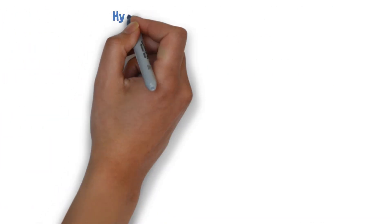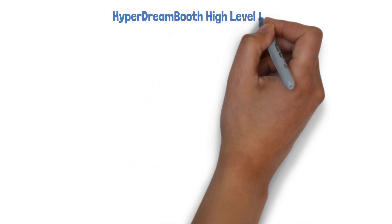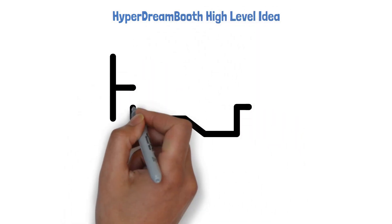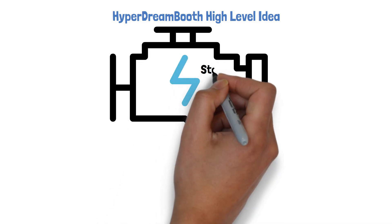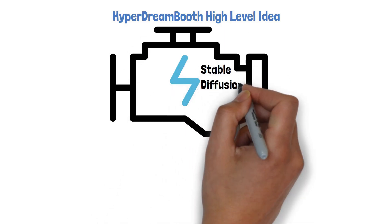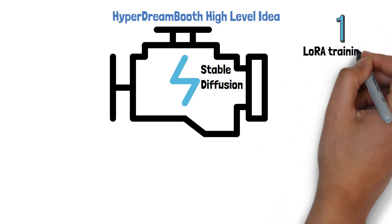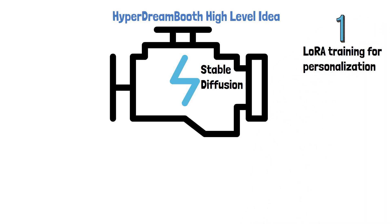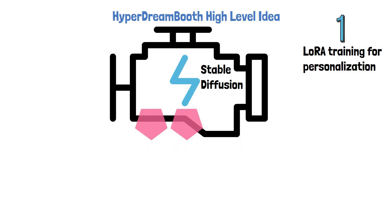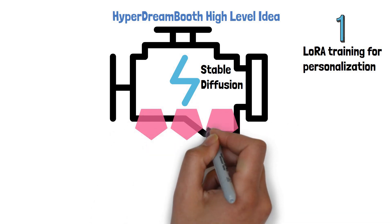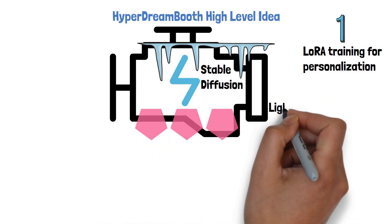So let's start to understand how HyperDreamBooth works, starting with the high-level idea. Given a pre-trained Stable Diffusion model, we do not fine-tune the entire model, but rather use LoRA training for personalizing the model for reference images. Meaning that a small number of weights are added to the model layers, and only the added adapter weights change while all pre-trained weights are kept frozen.